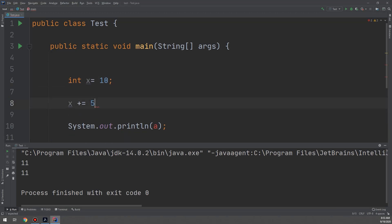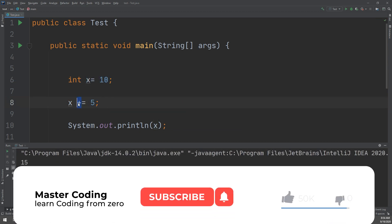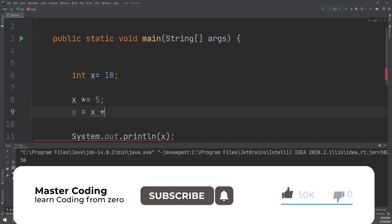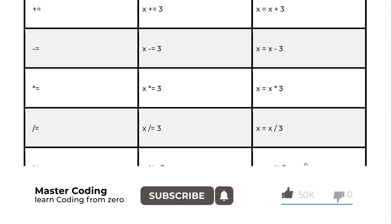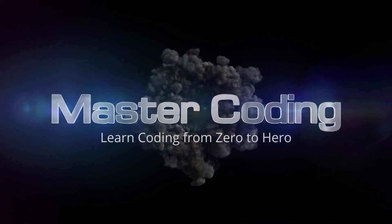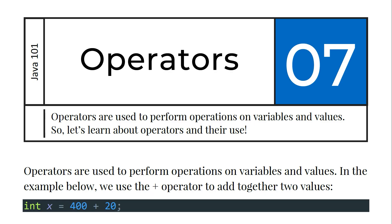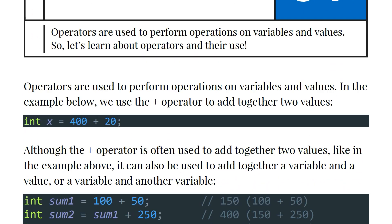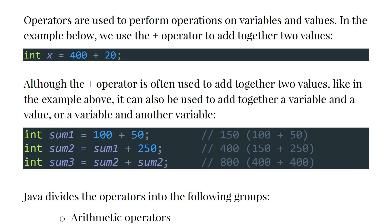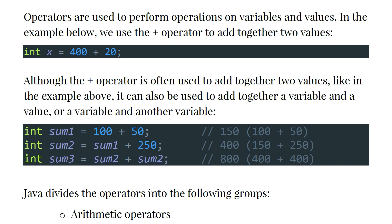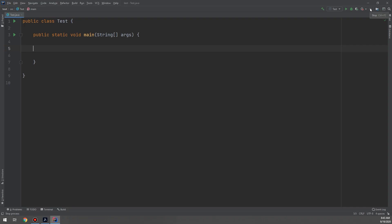We are going to learn about operators in Java. Hello, my friends, and welcome to Master Coding channel. If you want to learn coding and start your coding career, you came to the right place. Hit subscribe and like to help us make new tutorials. Let's begin learning about operators in Java. Operators are used to perform operations on variables and values. In this example, we use the plus sign operator to add together two numbers.